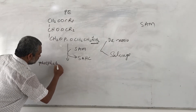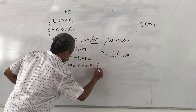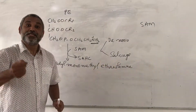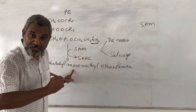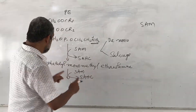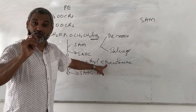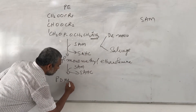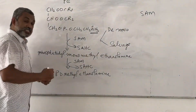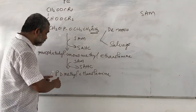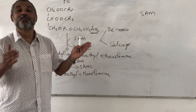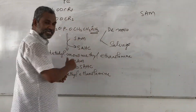The first methylation produces phosphatidyl monomethylethanolamine. In the next step, one more methyl group is added again by SAM, generating another S-adenosylhomocysteine, and the product is phosphatidyl dimethylethanolamine. In the third step, one more methyl group is added to phosphatidyl dimethylethanolamine.